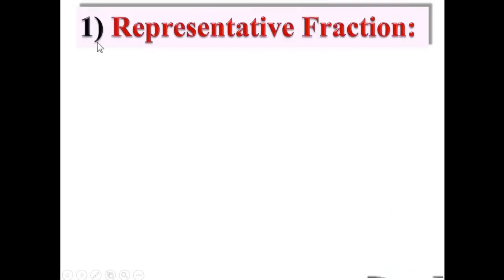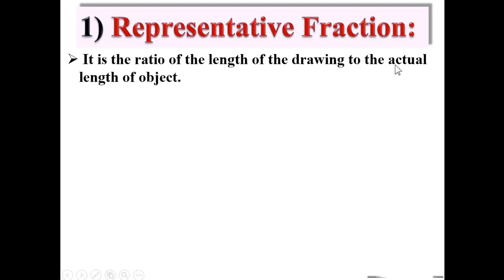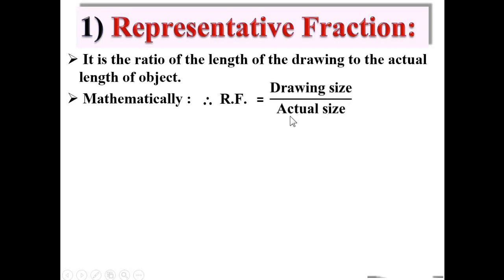Now let's start the first question: Representative Fraction, or RF. RF is the ratio of the length of the drawing to the actual length of the object. Mathematically, RF = drawing size / actual size. The length of the drawing is also called drawing size, and the actual length of the object is called actual size.